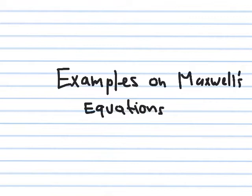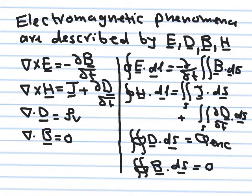Now we are going to introduce time variations in the fields, and we'll see how the electric and magnetic fields are both coupled together. When an electric field exists, a magnetic field will also exist, and when a magnetic field exists, an electric field will also exist. We'll start by reviewing Maxwell's equations and then move to the example.